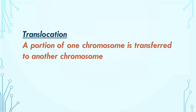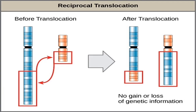Another type of variation is translocation, where a portion of one chromosome is transferred to another chromosome. Translocation can be of two types: reciprocal translocation and Robertsonian translocation. In reciprocal translocation, there is an exchange of parts between two chromosomes, and after the translocation there is no gain or loss of genetic information.